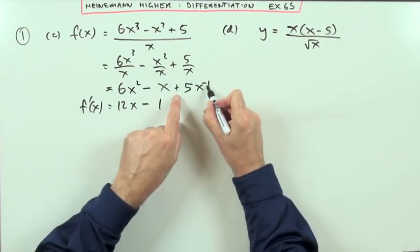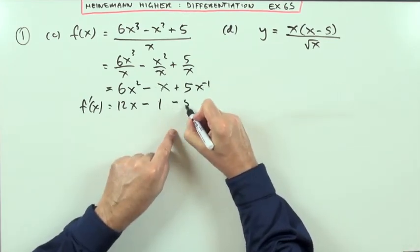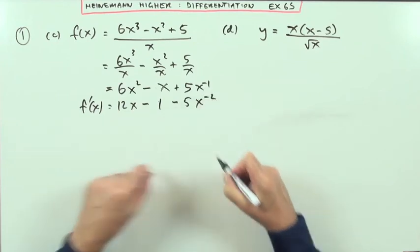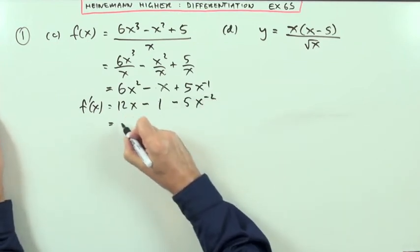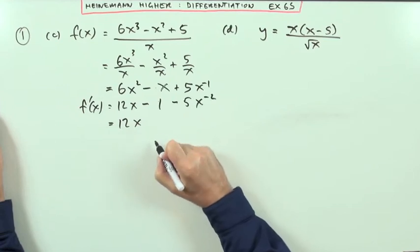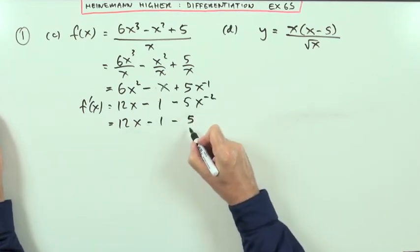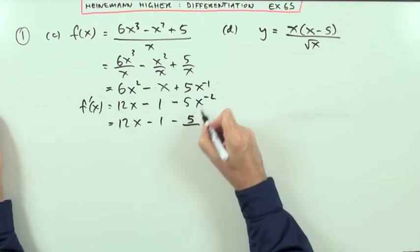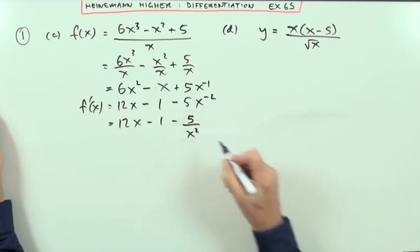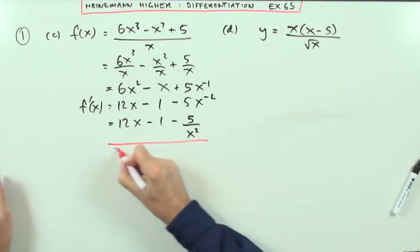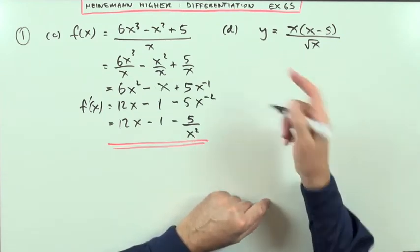And the last one. Multiply by the power. Negative 1 times positive 5 would be negative 5. 1 off the power. Negative 2. Let's put that back the way we found it. So there's 12x minus 1 minus 5. And that x should be underneath the negative power. It says underneath. And it's power 2 over x squared.